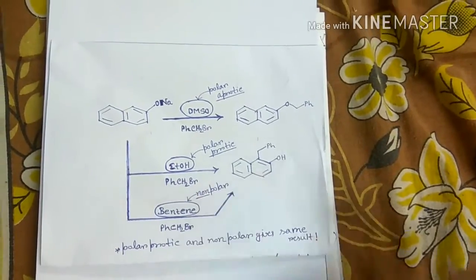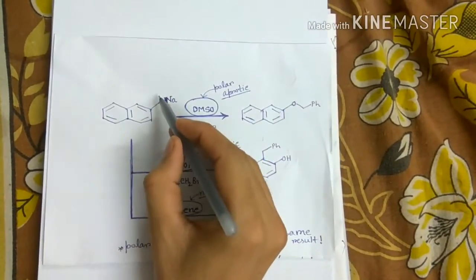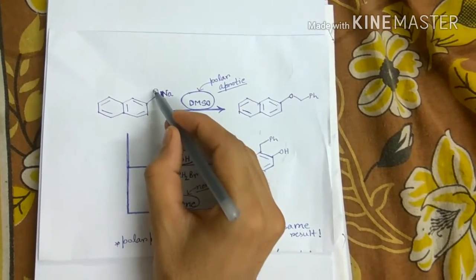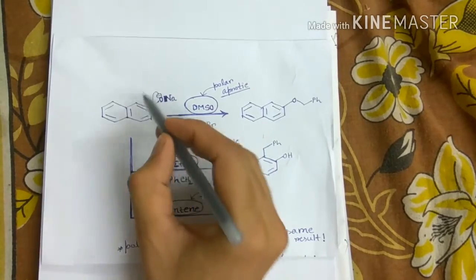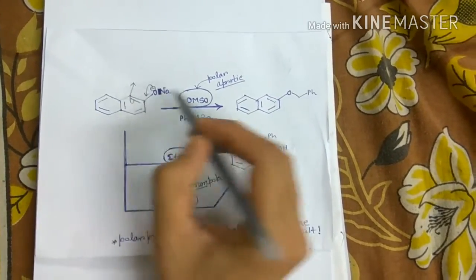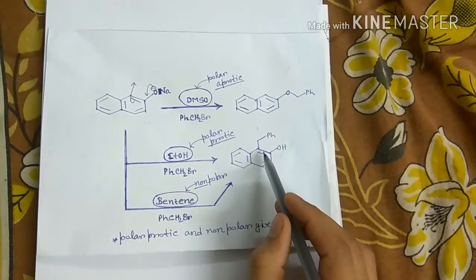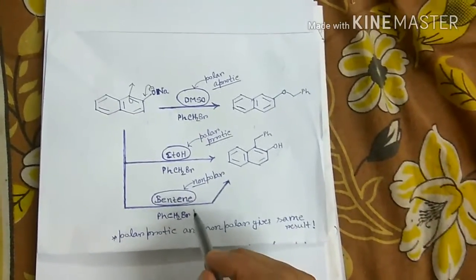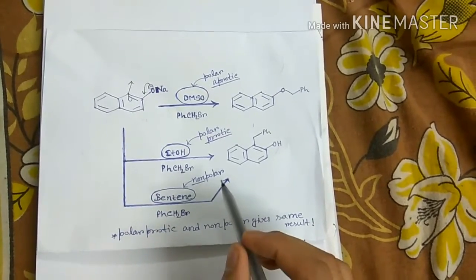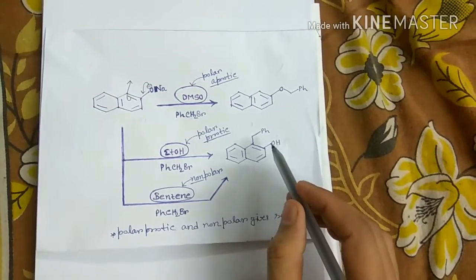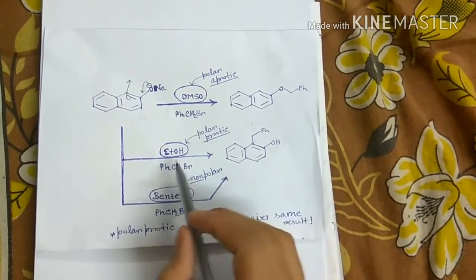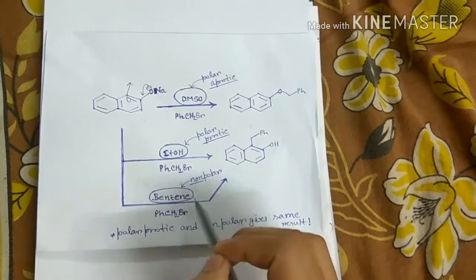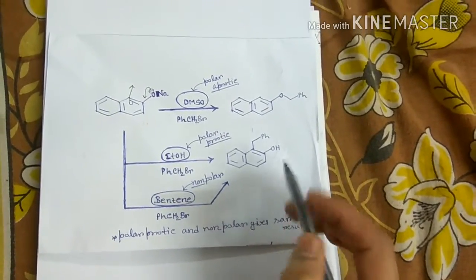In the second case, in a polar protic solvent like water or ethanol, C-alkylation occurs. The oxygen lone pair pushes its electrons and attack occurs from the carbon end — C-alkylation — to give this product. Interestingly, in benzene, which is a non-polar solvent, C-alkylation also occurs instead of O-alkylation.